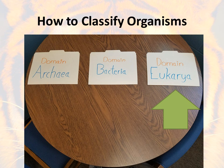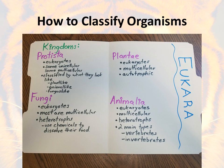Our final domain, Eukarya, is going to have four kingdoms in it. Think about similarities between them and the little differences. Starting with the Protista kingdom: these are eukaryotes, so those cells have a nucleus. Some are unicellular and some are multicellular. They are basically classified by what they look like — plant-like, animal-like, or fungus-like — with different subclassifications within there. Next, we have the Fungi kingdom. These are eukaryotes as well. Most of them are multicellular with a few minor exceptions, and these are heterotrophs. They use chemicals to actually dissolve their food — it's not so much eating as it is dissolving it while they grow on it.